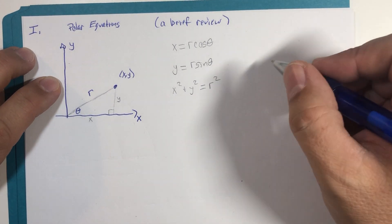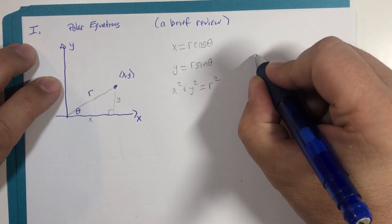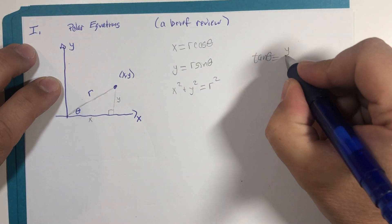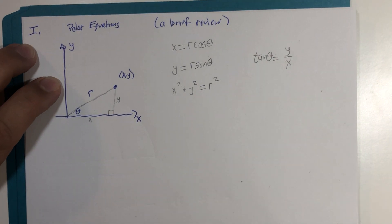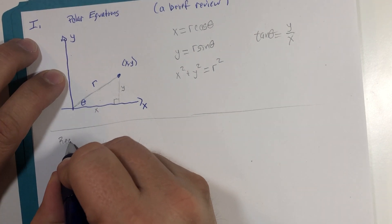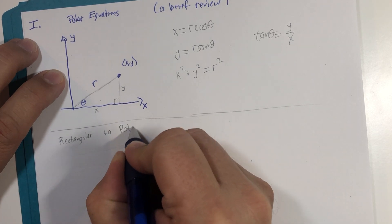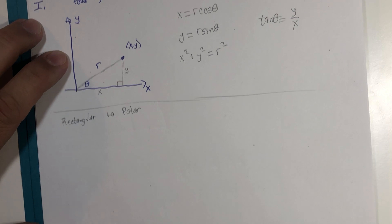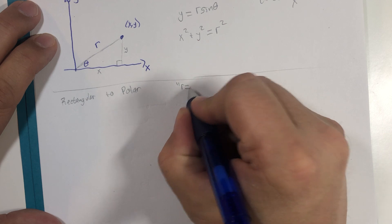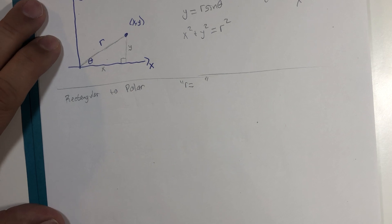A lesser used formula is that the tangent of theta is the opposite leg over the adjacent leg. Now, let's put these to work. We're going to convert from rectangular, the x and y world, to polar. Most of the time, our objective will be to solve it for r equals. But you will find that that's not 100% possible every time.